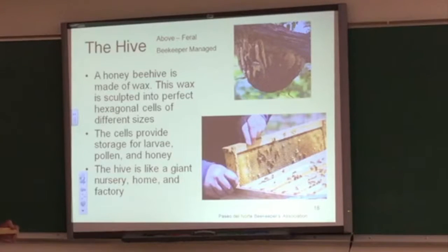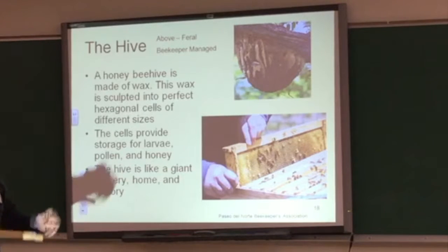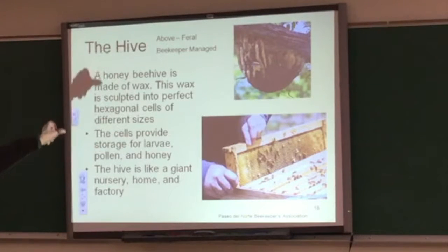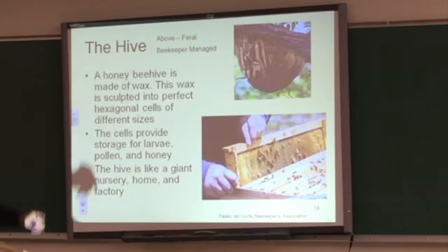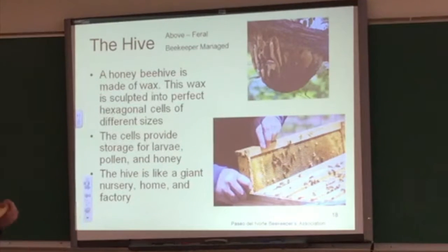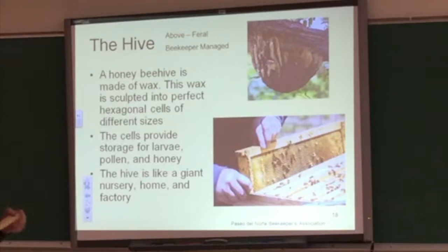The first thing that we can talk about when it comes to bees is the honey bee hive. The honey bee hive is made out of wax and is sculpted into perfect hexagonal cells of different sizes. These cells provide storage for the bees, where they store their equipment such as wax and pollen.